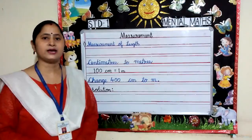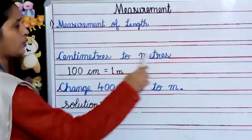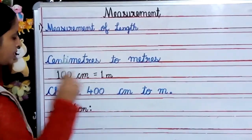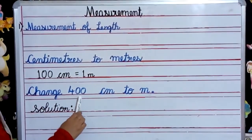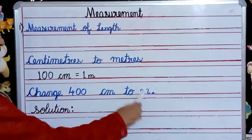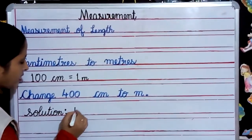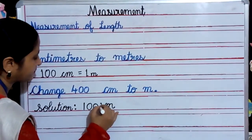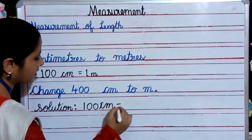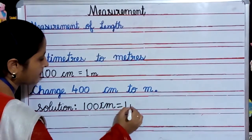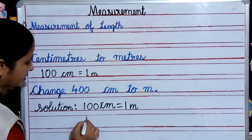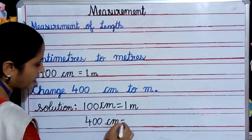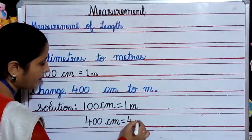Now let's convert centimeters to meters. 100 centimeters equals 1 meter. Here we have to change 400 centimeters to meters. Solution: 100 centimeters is equal to 1 meter. So 400 centimeters is equal to 4 meters.